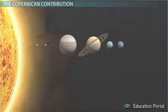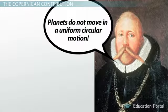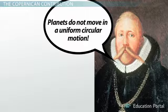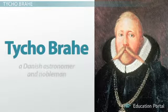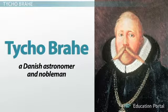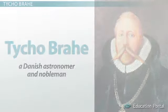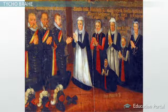This created space for other astronomers to come up with their own theories about our universe. One such famous astronomer was Tycho Brahe. Tycho Brahe was a Danish astronomer and nobleman.